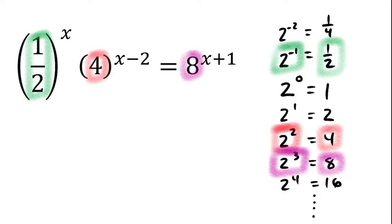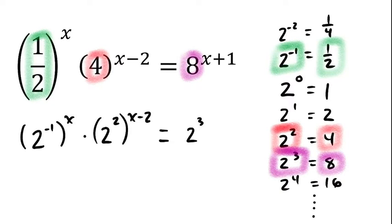So, if I rewrote these as powers of two, I could write one half is two to the negative first raised to the x power times four, which is two to the second. And that's being raised to the x minus two power. And that equals eight, which is two to the third. And that's being raised to the x plus one power.